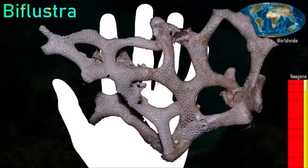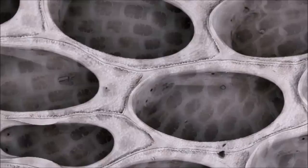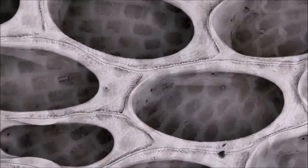Biflustra is a cheilostome bryozoan with a hard skeleton composed of calcium carbonate. It forms encrusting, flat, bifoliate colonies. Tubular chambers called autozoecia house the small soft-bodied individuals of the colony. Each autozooecium had a ring of tentacles around its mouth known as a lophophore. Small hair-like organs on the tentacles create a flow of water to drive food particles toward the mouth. When the autozooids are not feeding, their tentacles can be withdrawn into the autozoecia for protection.